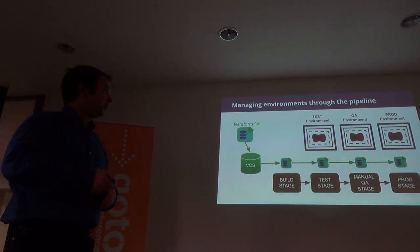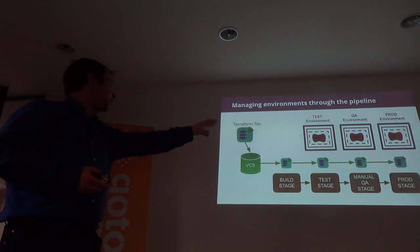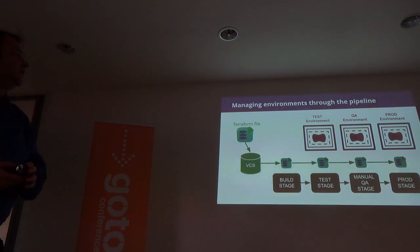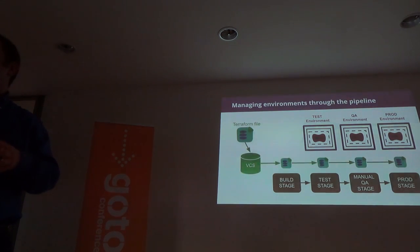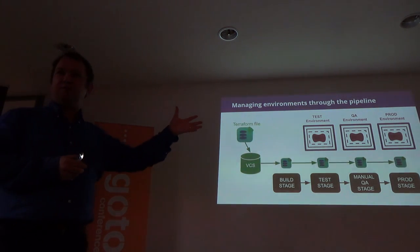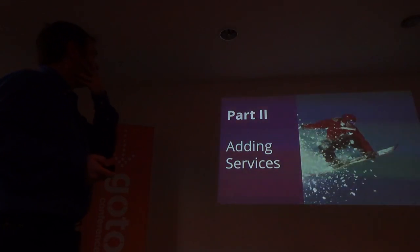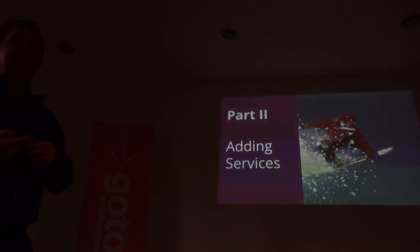If we get a failure in any stage, we don't fix the code there — we go back to source, fix it, and push it through the pipeline again. This is where keeping the process quick and well-streamlined matters, so it's a reasonable and easy way to work rather than becoming too painful and tempting you to take shortcuts like editing files on the server directly — which causes regressions when the next commit overwrites your manual fix.